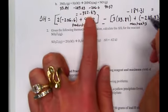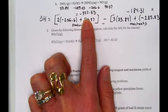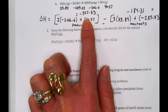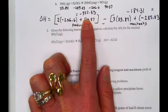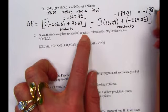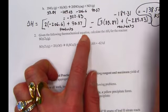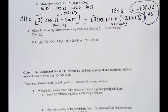I'll take products minus reactants. Negative 322.83 minus a negative 184.31. And I have negative 138.52 kilojoules. Let me get that on the screen. Negative 138.52.